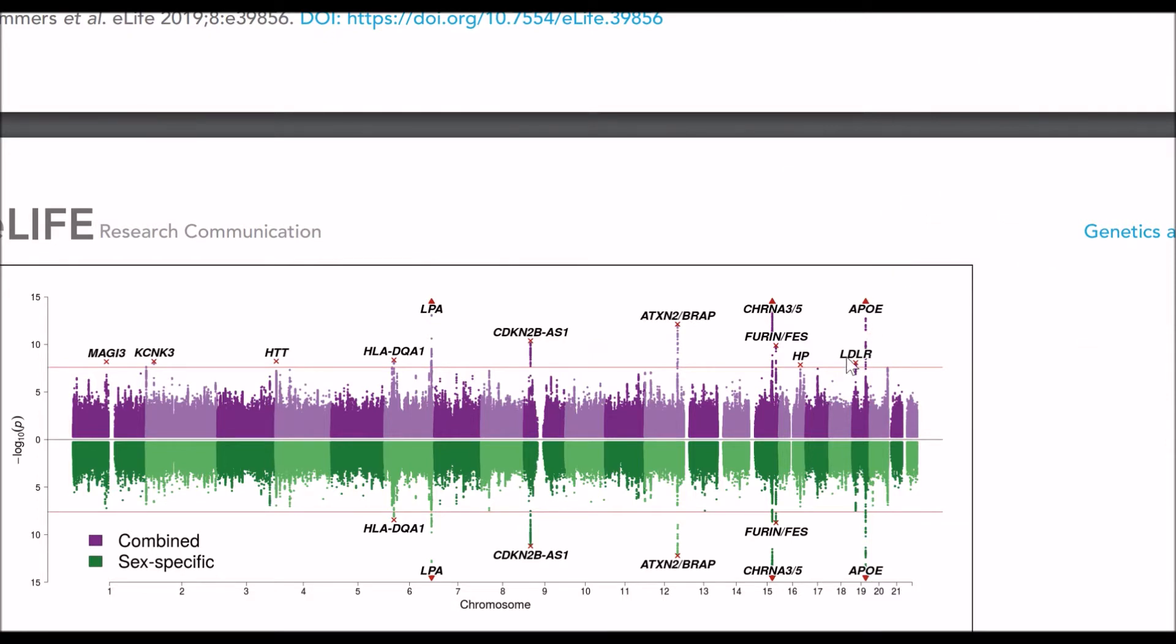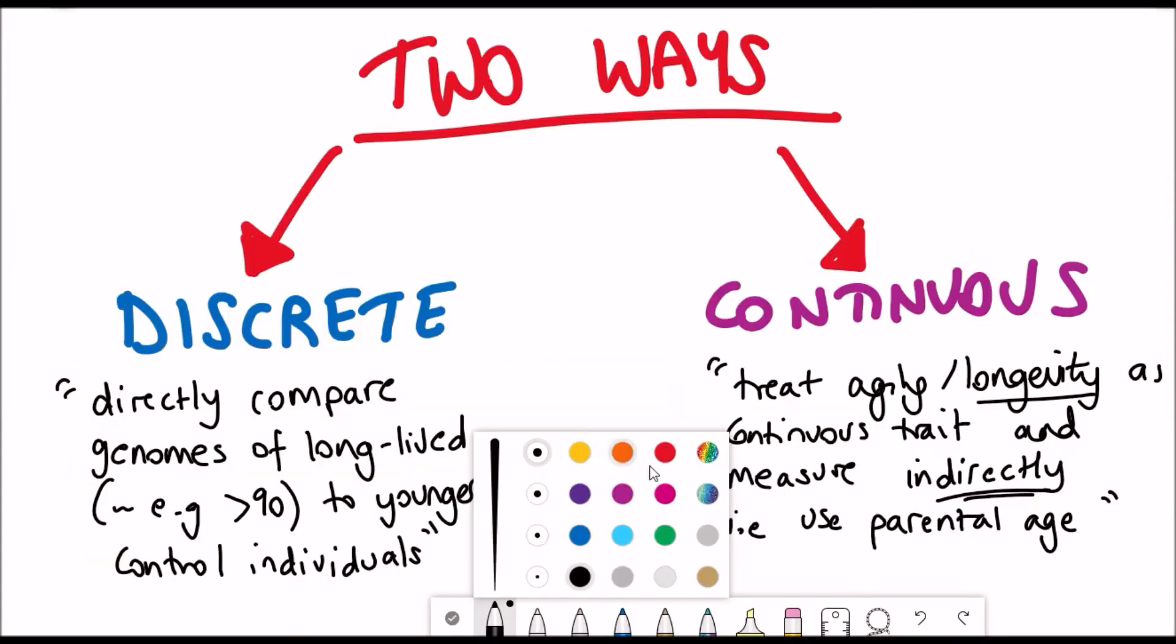Nonetheless, many of these loci identified have got links and associations with cardiometabolic conditions, which kind of links back to the hallmarks of aging. But as I said, I'll go into more detail in just a bit.